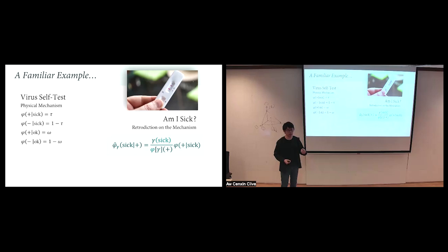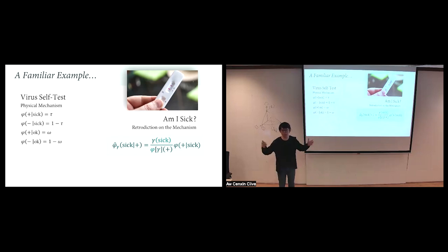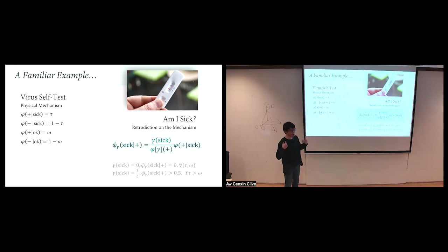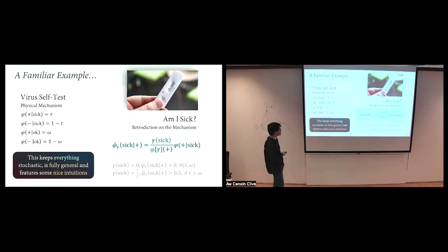When you get the result and don't believe it and test again, you're doing a Bayesian update. First you have some reference prior - maybe 0.3 that you're sick. You get a positive result, it bumps up to 0.6. You test again with 0.6 as your prior, and it updates to 0.8. If you believe you can never get sick - prior of zero - then no matter how many tests you run, you'll conclude the result isn't real. As long as tau is bigger than omega and you're unbiased, you'll be more convinced than not. This keeps everything stochastic and is fully general.